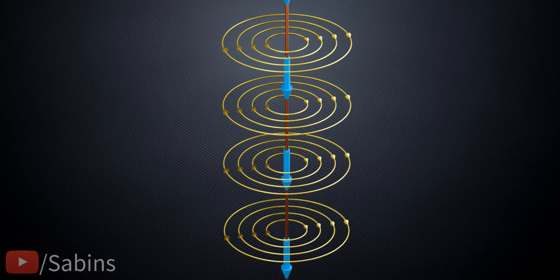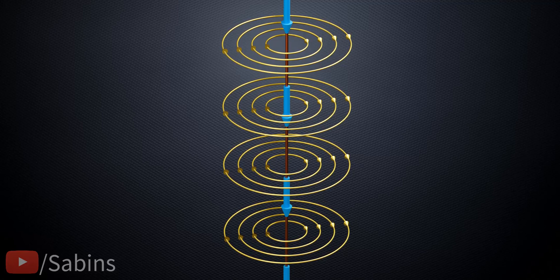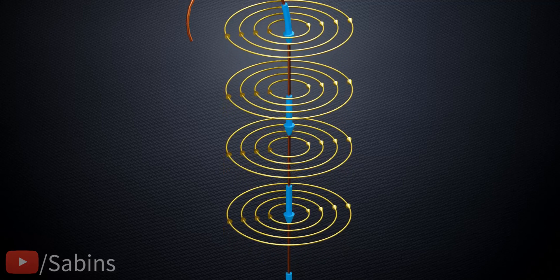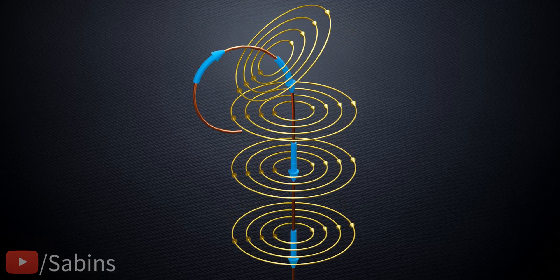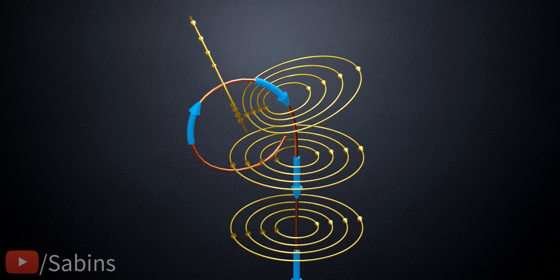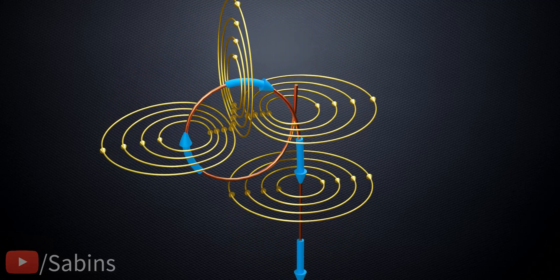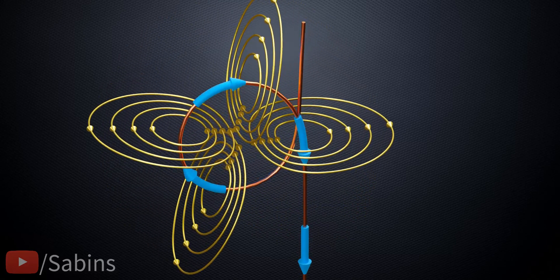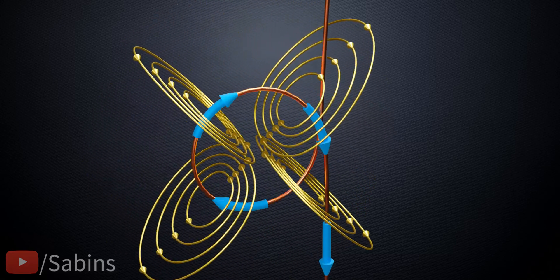A current-carrying conductor produces a magnetic field around it, as shown. Let's do an interesting experiment. Let's bend the wire. As you bend the wire, the magnetic field lines interact with each other and produce an interesting magnetic field pattern, as shown.